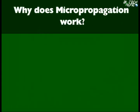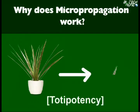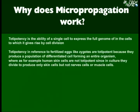Why does micropropagation work? Plants have the ability to reproduce the whole plant from a single cell — this is called totipotency. In reference to fertilized eggs like zygotes, they are totipotent because they produce a population of differentiated cells forming an entire organism. Whereas, for example, human skin cells are not totipotent, since in culture they divide to produce only skin cells but not nerve cells or muscle cells.